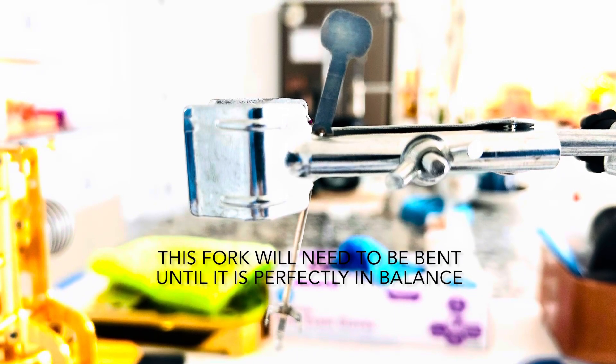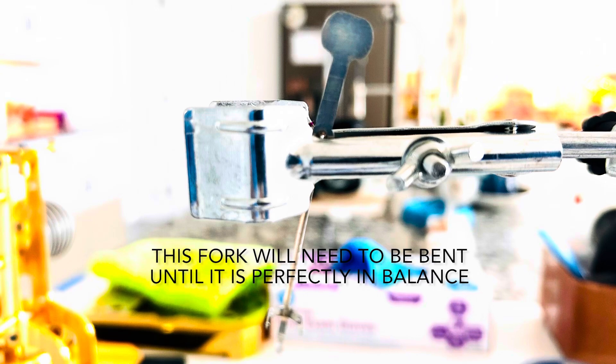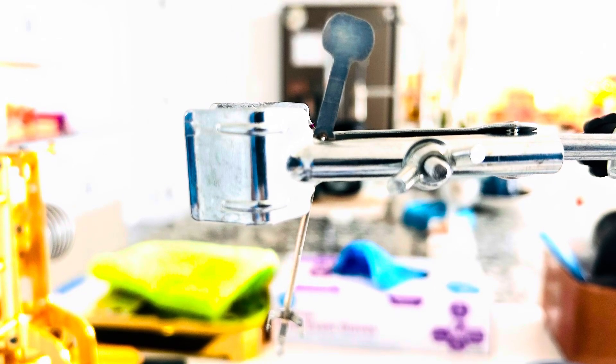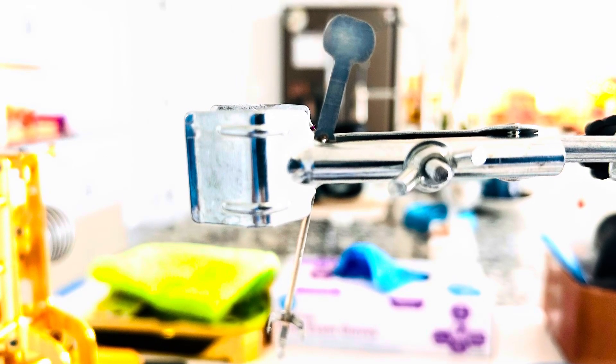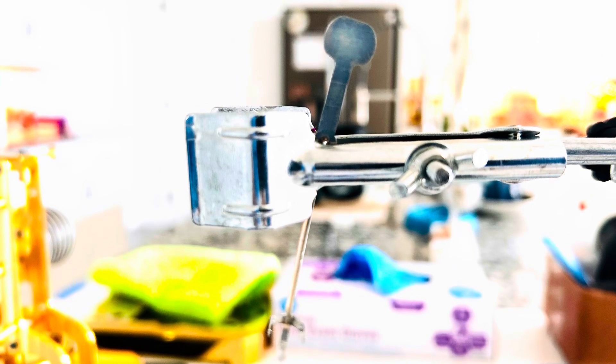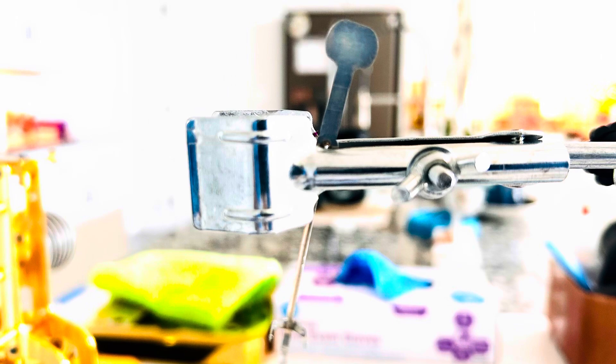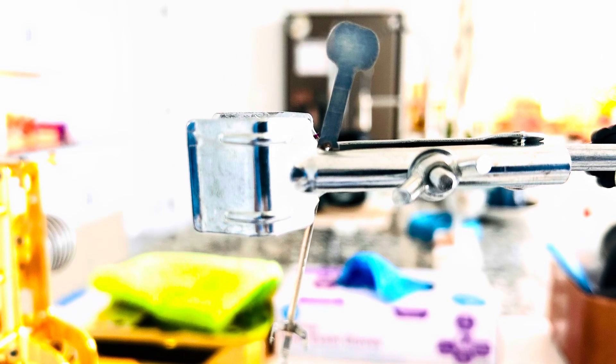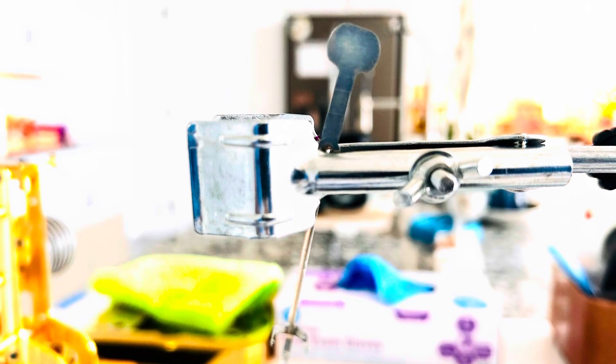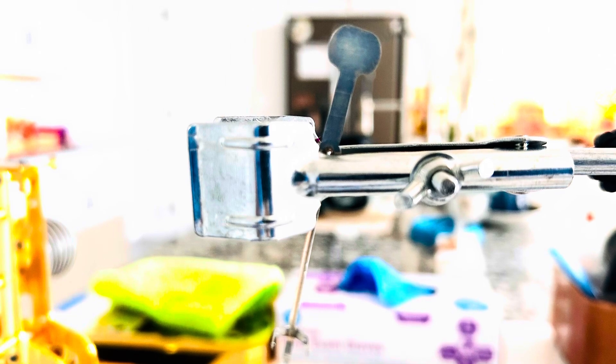I removed the fork from the movement even though it looked straight. Once I put it on my tool to poise the forks, you can see how out of balance the fork is. This is why it will not rotate to one side more than the other. One side is just too heavy. The other side moves easily because it's very light.